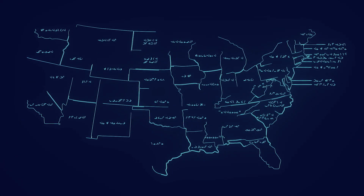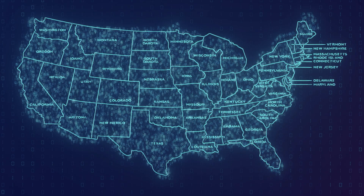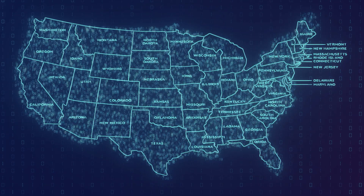Geospatial is a complex word — all it means is data on a map. So if you've ever seen a map with data on it, like a map of the United States that shows the states, that's geospatial. Geospatial AI just means we're using artificial intelligence on a map to analyze the differences between different areas of the country, of the world.